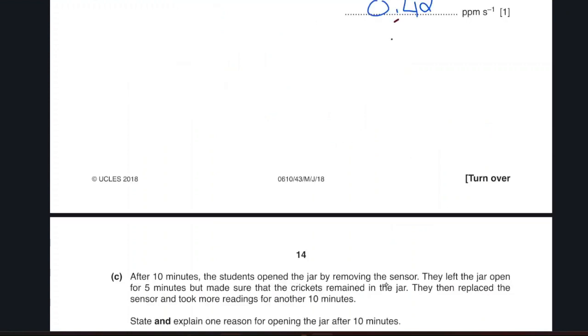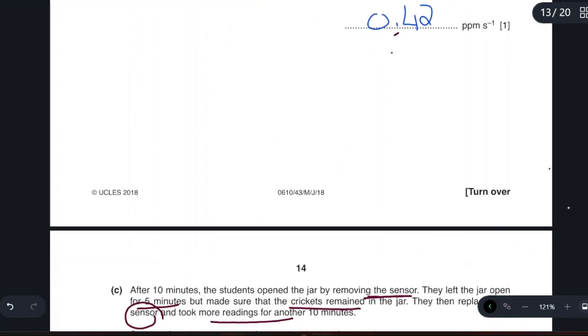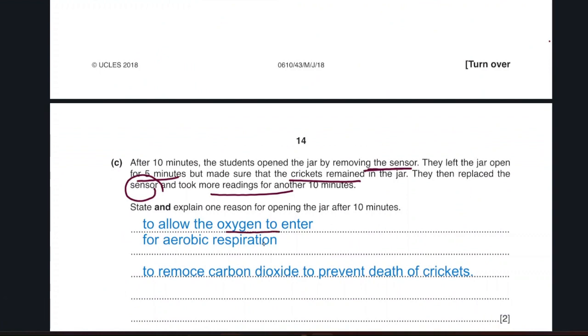After ten minutes the students opened the jar by removing the sensor they left the jar open for five minutes made sure that the crickets remained in the jar and then they replaced the sensor and took more readings. He took the readings and then opened the jar, the sensor is inside the jar. Why did he do this? These are living organisms that respire so they take in oxygen and they give out carbon dioxide. If the jar remained closed all the oxygen will be finished. This is why I opened it to allow the oxygen to enter for aerobic respiration, also remove the carbon dioxide to prevent the death of crickets. If the carbon dioxide concentration is high it may cause the death of crickets.